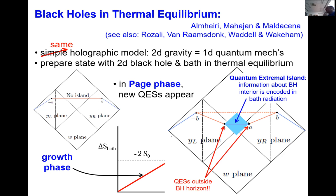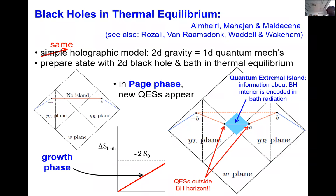They also noted that those quantum extremal surfaces actually appear outside of the black hole horizon, which seemed somewhat mysterious at the time. I'll comment on that briefly later. This is a scenario I'd like to recover using the Randall-Sundrum construction in a general higher-dimensional scenario.